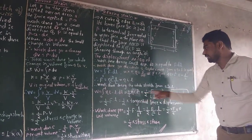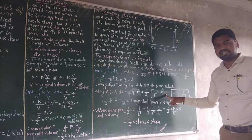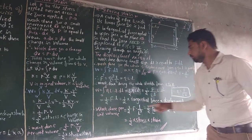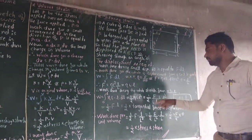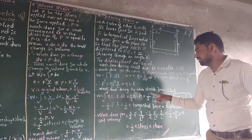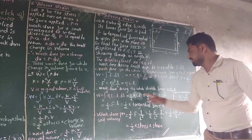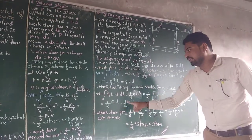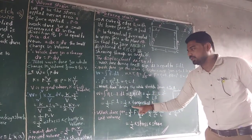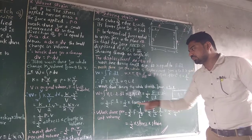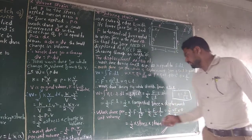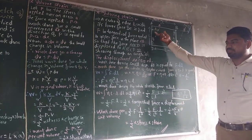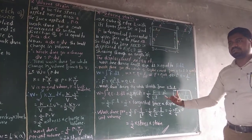Putting in the values and simplifying: the L terms cancel and capital L terms cancel, leaving W equals (1/2)·F·small L, where F is the tangential force and L is the displacement. This is the work done.